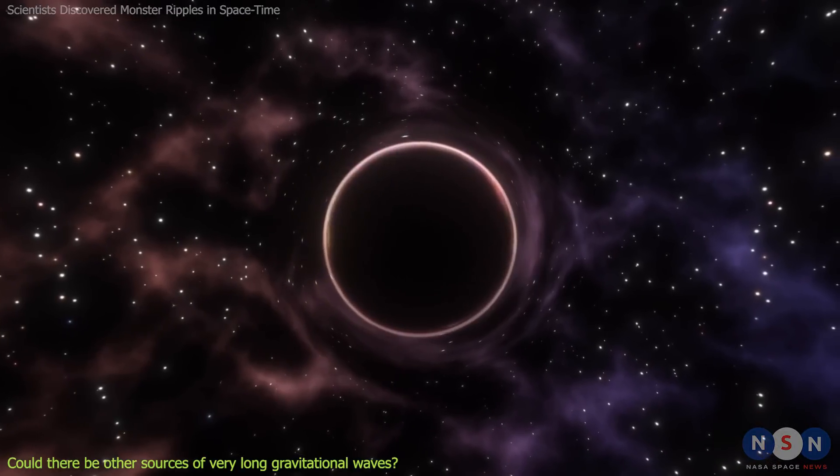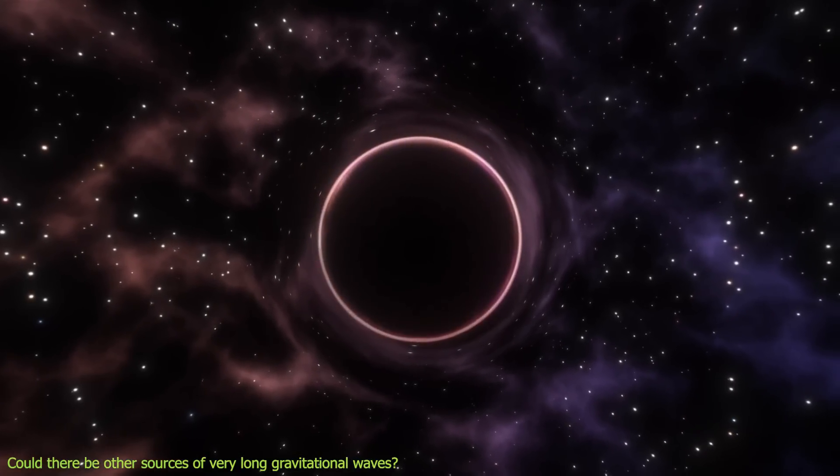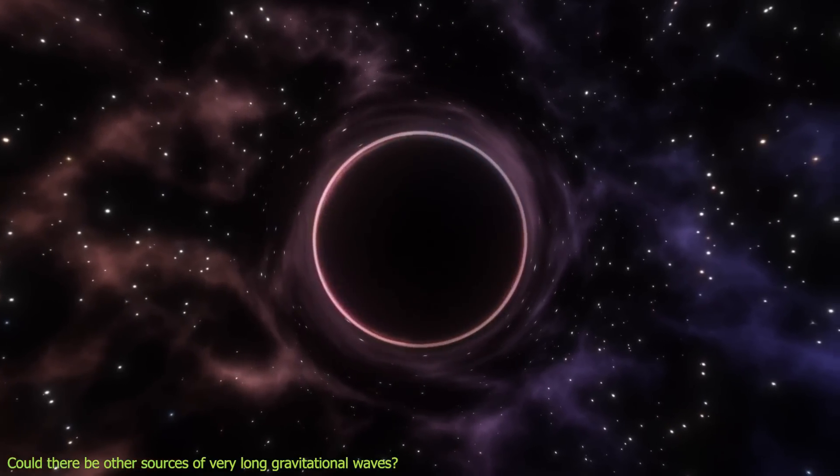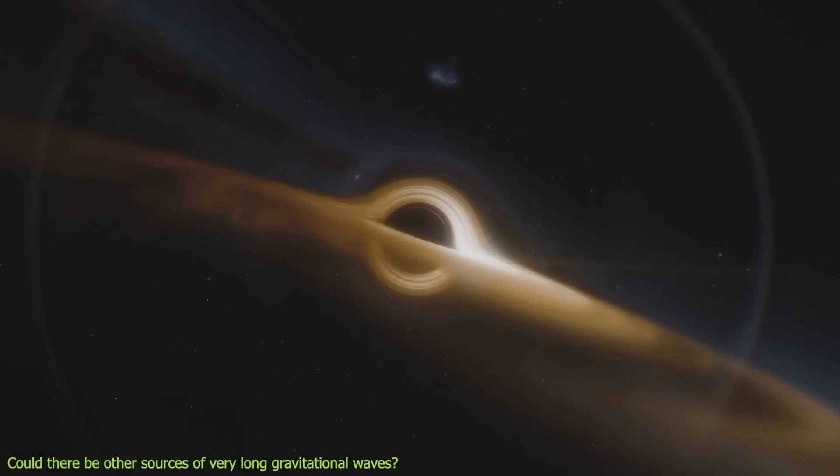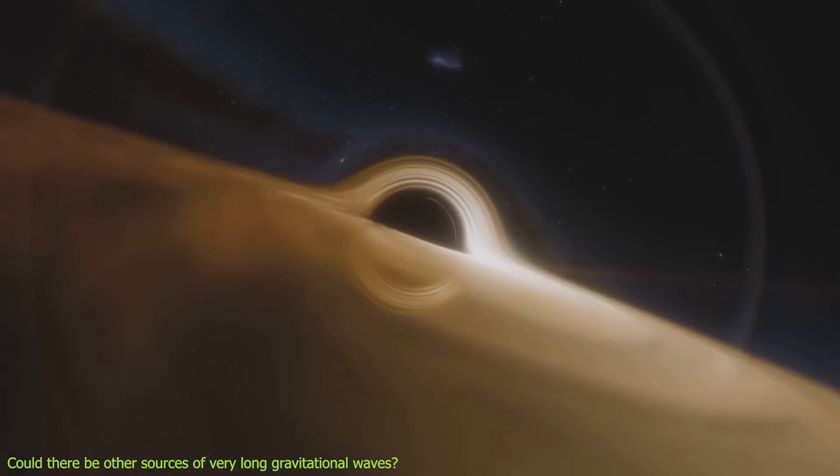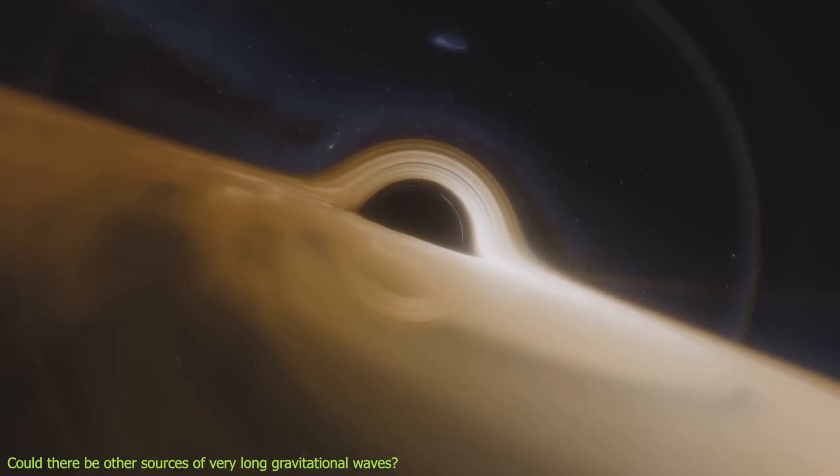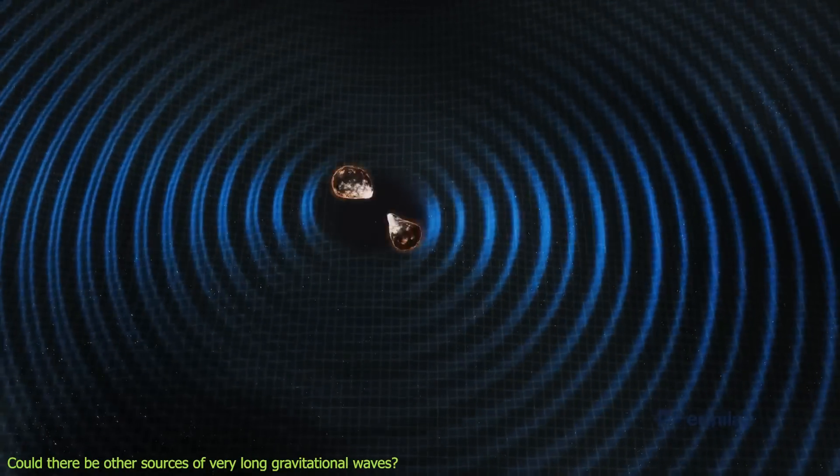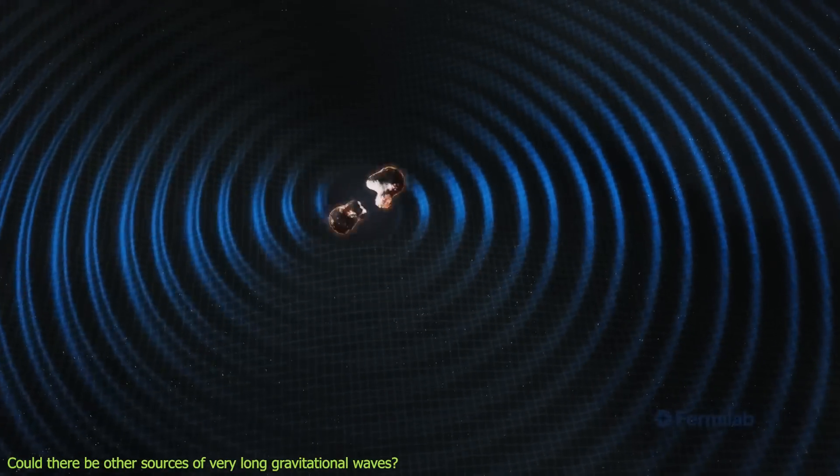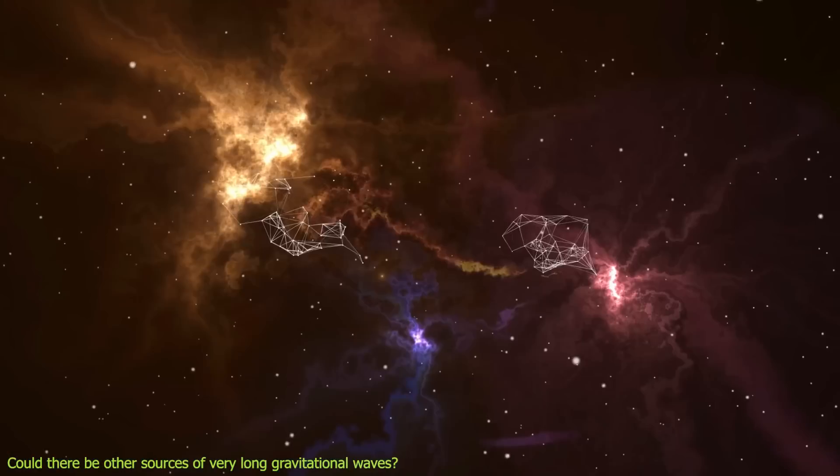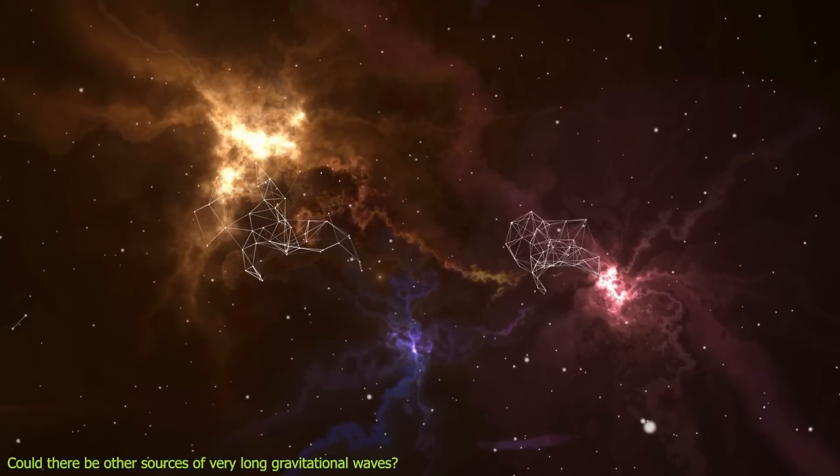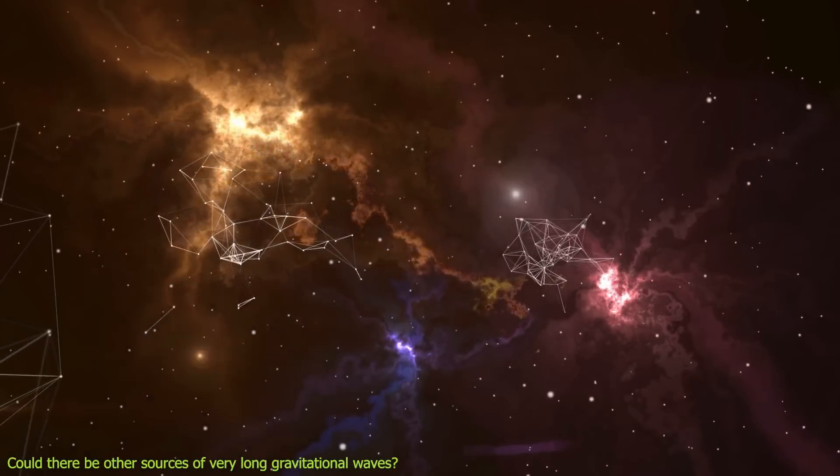Primordial black holes are hypothetical black holes that could have formed from density fluctuations in the early universe before stars and galaxies were born. They could have masses ranging from subatomic particles to billions of suns, depending on when and how they formed. Some of them could form binaries and emit gravitational waves, but they would also affect the cosmic microwave background radiation, and the distribution of matter in the universe in ways that are inconsistent with current data.